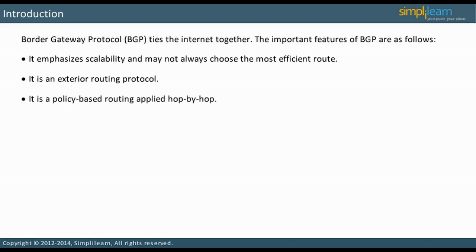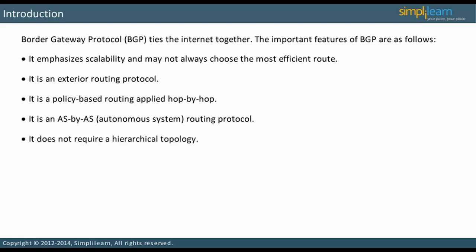It is policy-based routing applied hop-by-hop. BGP is an AS-by-AS autonomous system, not a router-by-router routing protocol. Therefore, BGP does not require a hierarchical topology. BGP offers only one path to the routing table by default. It does not inherently have capabilities for equal or unequal cost load balancing as EIGRP does.